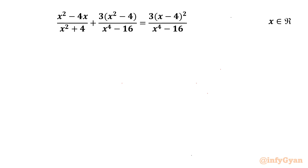Welcome back to InfiGyaan, my dear friends. In this video, we are going to solve one challenging rational equation problem: x² - 4x over x² + 4, plus 3 times (x² - 4) over x⁴ - 16, equals 3 times (x - 4)² over x⁴ - 16. We have to find out all real solutions. So let us get started.